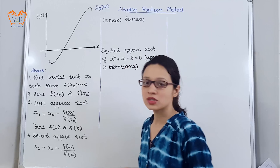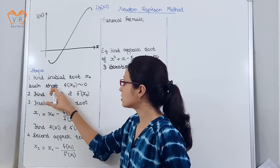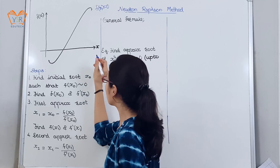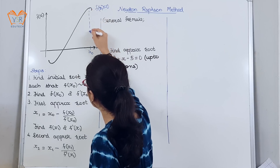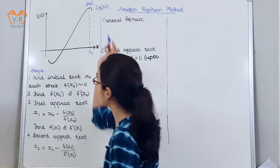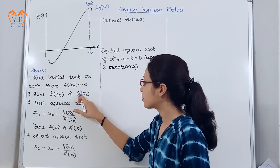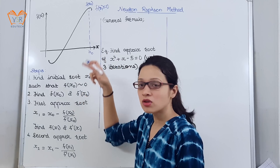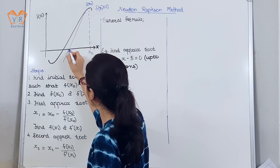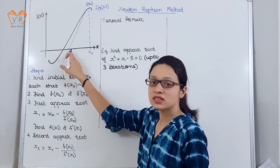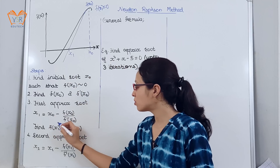We will understand it through the steps. Steps for the Newton-Raphson method. First step: find initial root x₀ such that f(x₀) is approximately equal to 0. We will choose x₀ as this, so f(x₀) is this value. Now find the value of f(x₀) and the derivative at x₀. To find the derivative, simply draw a tangent that crosses the x-axis — this gives us x₁, the first approximate root.